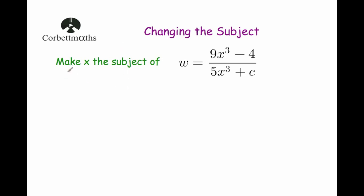So here's our first question: make x the subject of w equals 9x cubed subtract 4 over 5x cubed plus c. We want to make x the subject, so what we want to do is bring all the x's to one side and everyone else to the other.